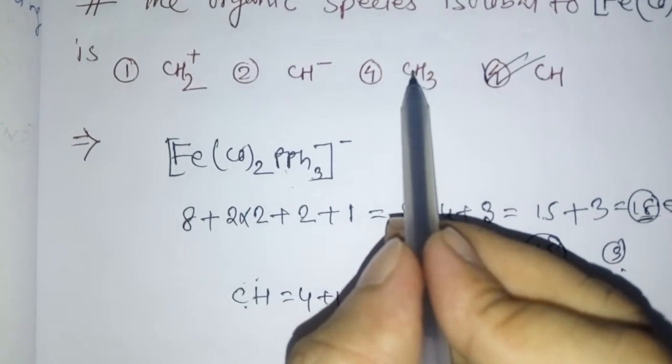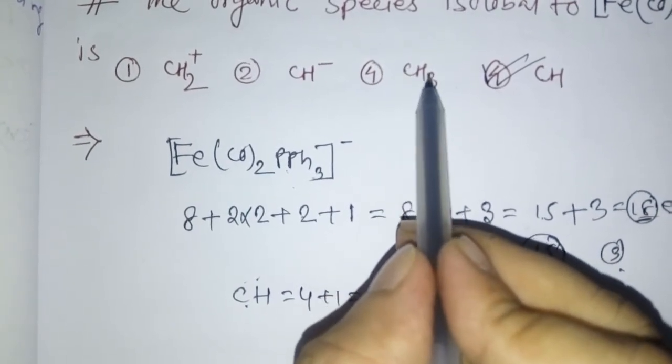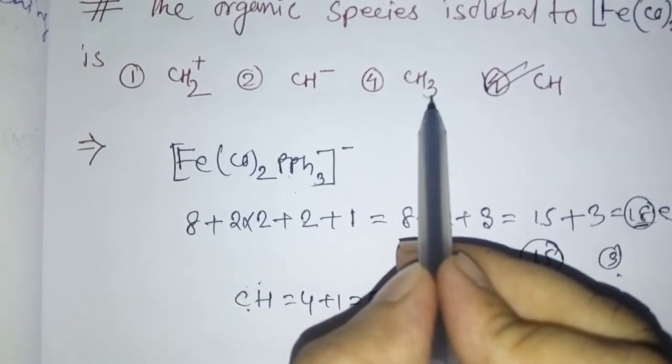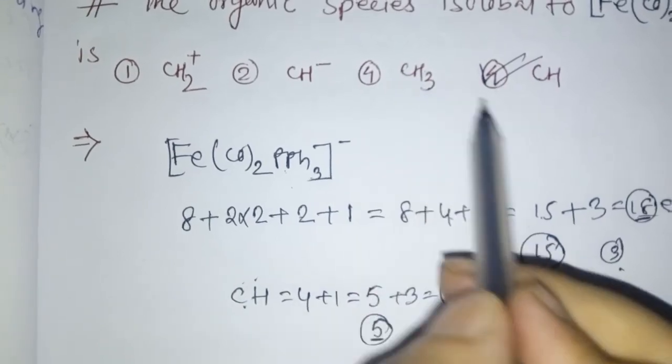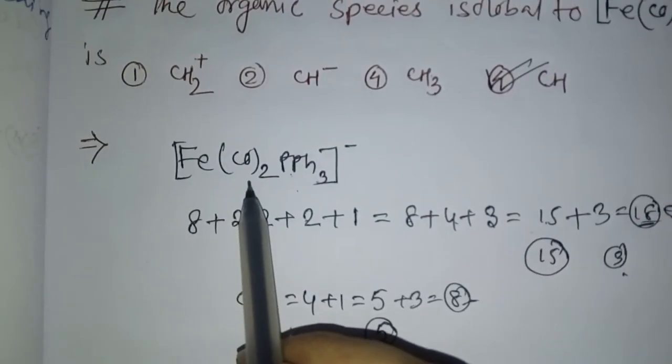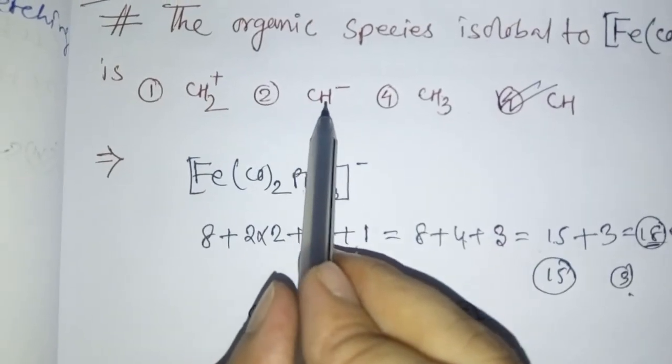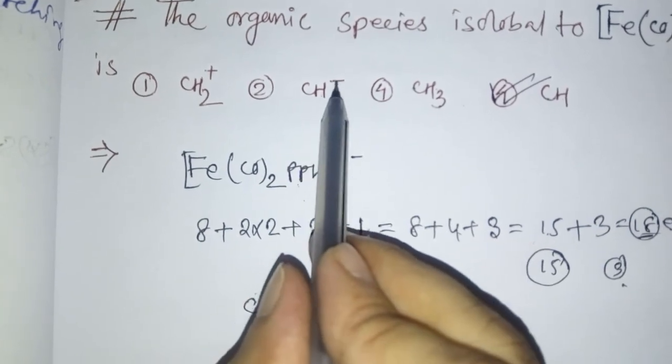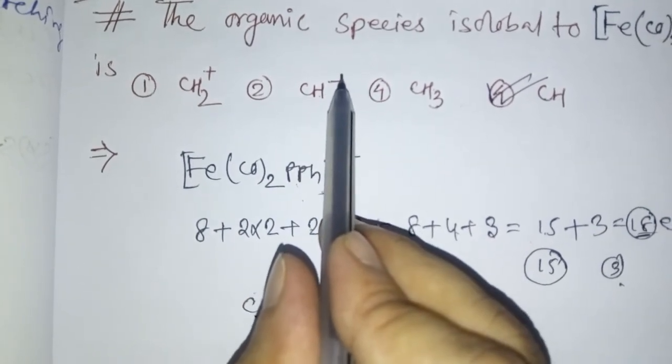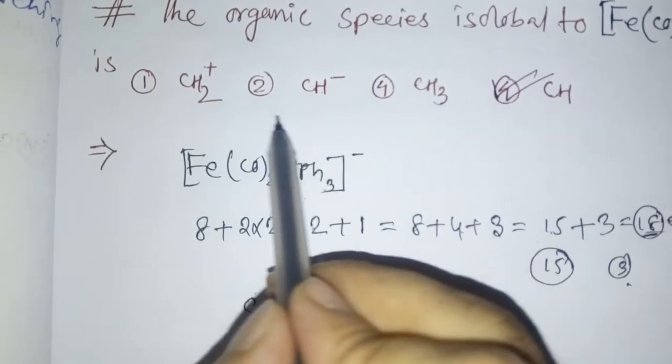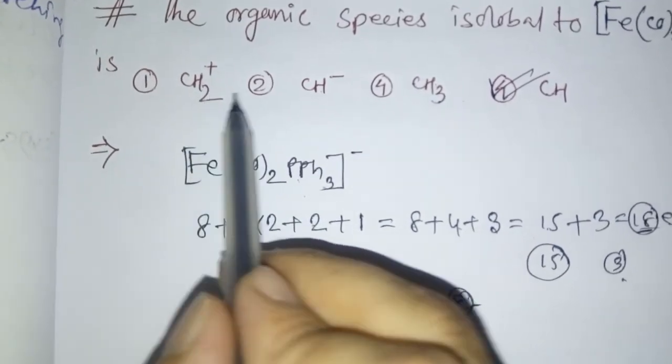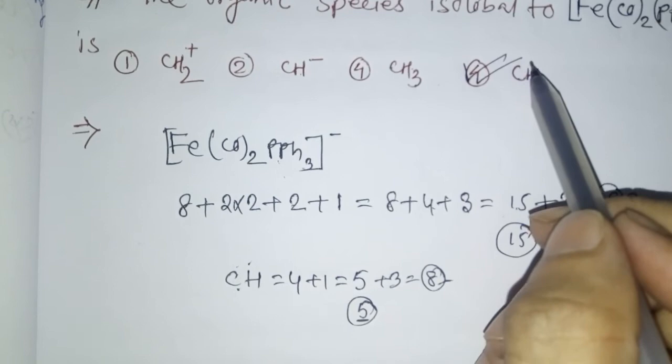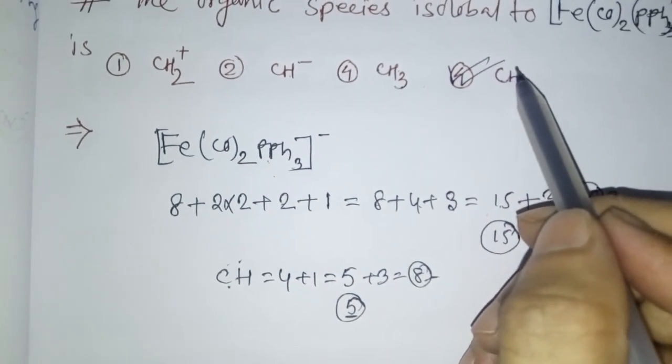This option cannot be the answer. This one is 4 plus 3 equals 7, not isolable with this one. This one is also 4 plus 1 equals 5, then 6, so how many left for stable? 2. This one is also not correct, and this one also not.